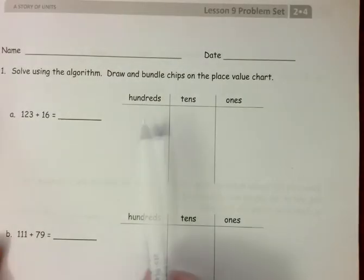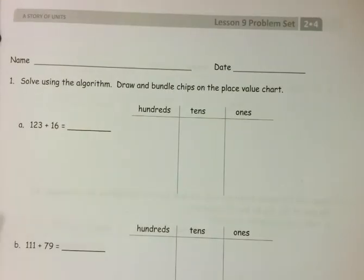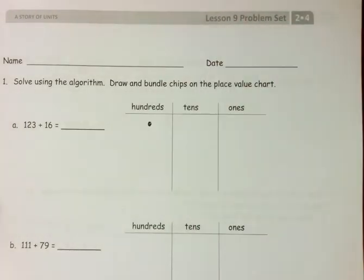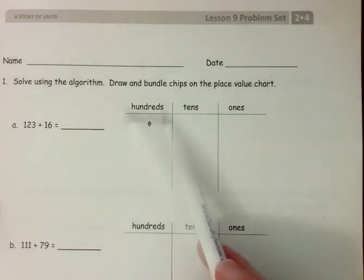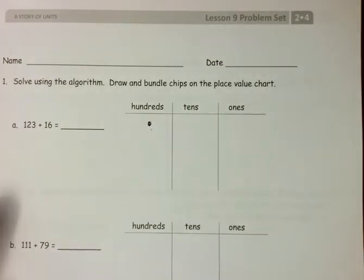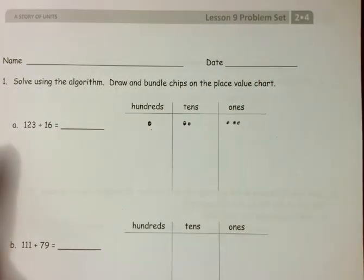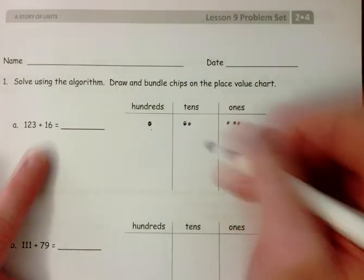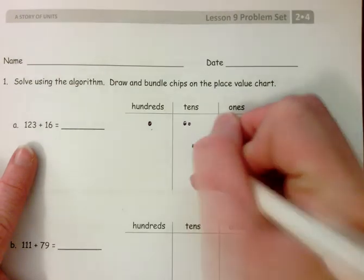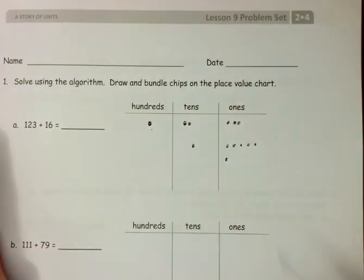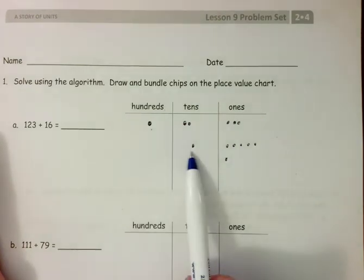Once we label our place value chart, we can actually just draw dots. One dot under the word hundreds is 100. Two dots in 10s is two 10s. Three dots under ones is three ones. So if I was adding 123 plus 16, I have 139.